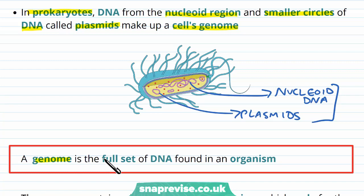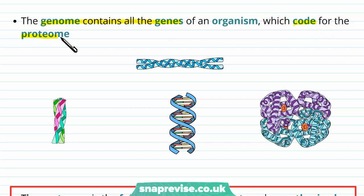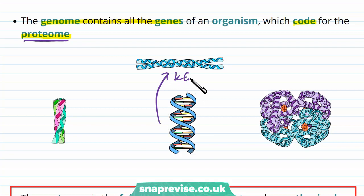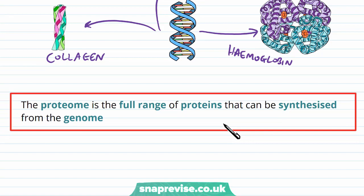The genome contains all of the genes that an organism would ever need, which code for all of the proteins that the organism would need as well. The proteome is a word that refers to all of the different proteins that are made by those genes. The genome is all of the genes found in the cell; the proteome is all of the proteins made by all of those genes. For example, the protein keratin can be made by a particular gene, found in hair and nails. Collagen is made by a different gene. And there are proteins that are more functional, like hemoglobin, made by another gene. There's a massive range of proteins — this would be the proteome. By definition, the proteome is the full range of proteins that can be synthesized from the genome.